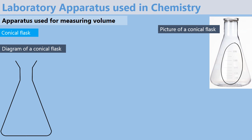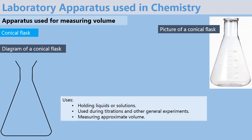This means that a conical flask can be used to measure volume. Other uses of a conical flask include holding liquids, they are used during titrations, and other general experiments, as well as measuring approximate volume.